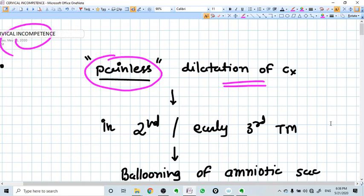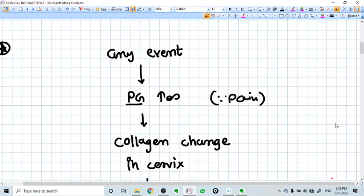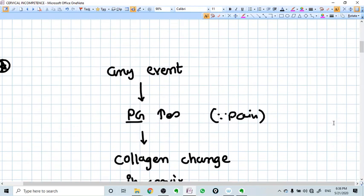Simply put, the cervix is not able to hold the pregnancy till term. In second trimester only, the cervix itself gets dilated or effaced so that the products of conception come out. This is cervical incompetence.